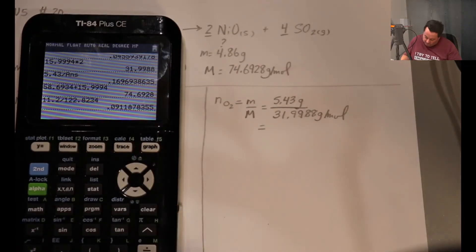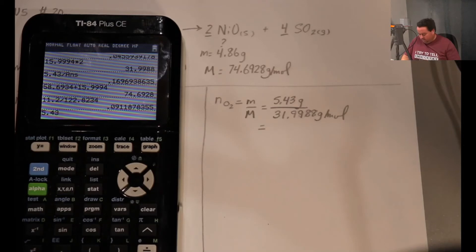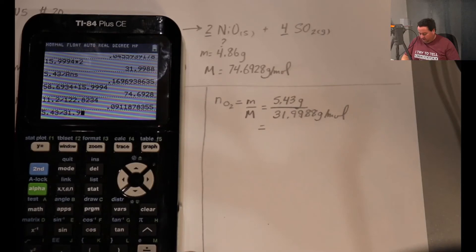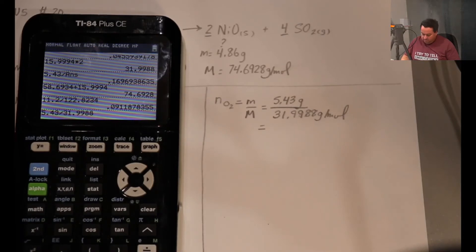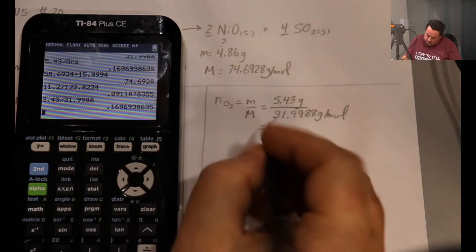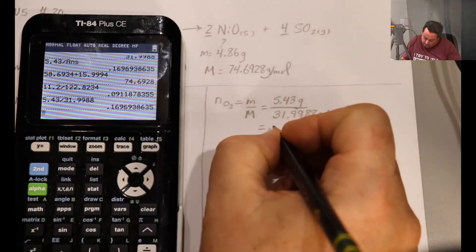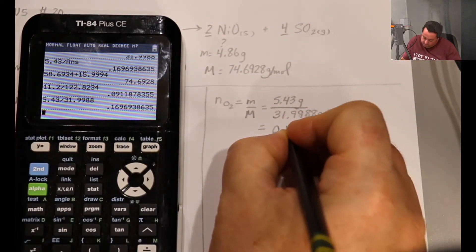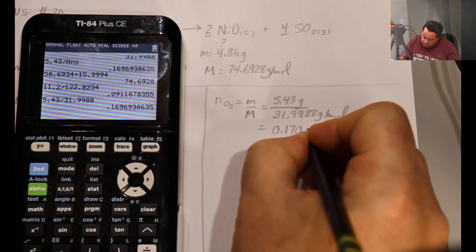So over here we have 5.43 divided by 31.9988, which equals 0.170 moles.